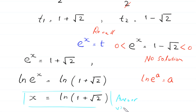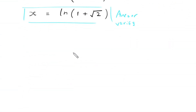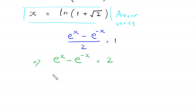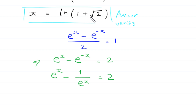Now let us verify this value of x by putting it into the original equation. The original equation is e to the power x minus e to the power negative x, divided by 2, is equal to 1. Multiplying both sides by 2 gives e to the power x minus e to the power negative x equals 2. Rewriting e to the power negative x as 1 over e to the power x, and substituting x equals ln of 1 plus square root of 2: